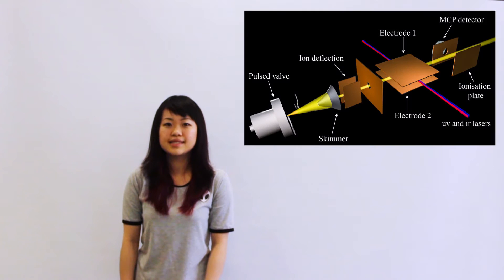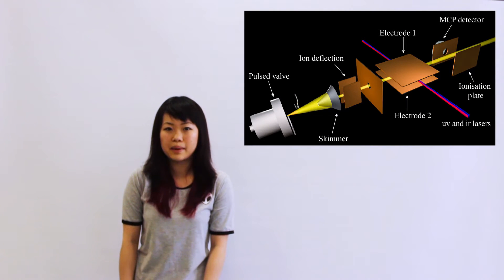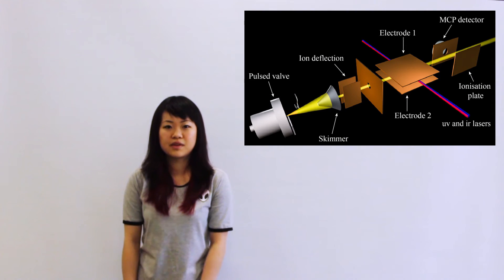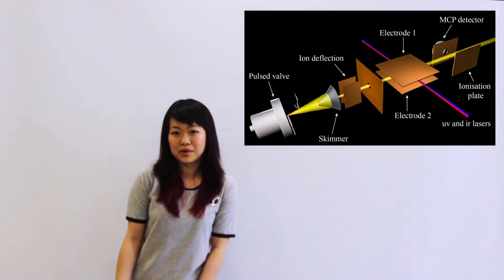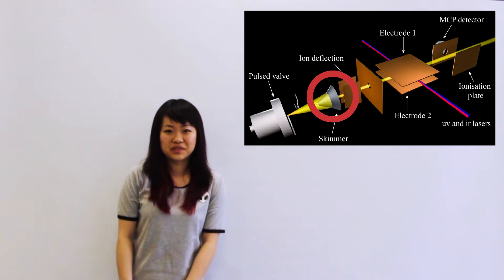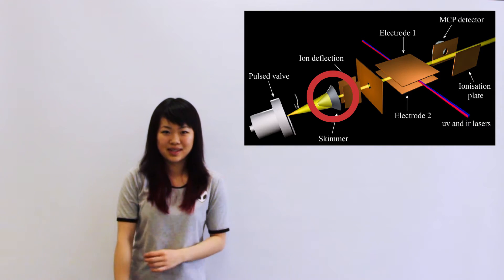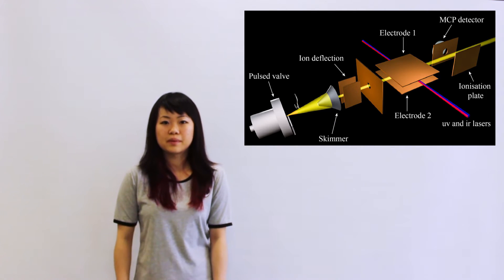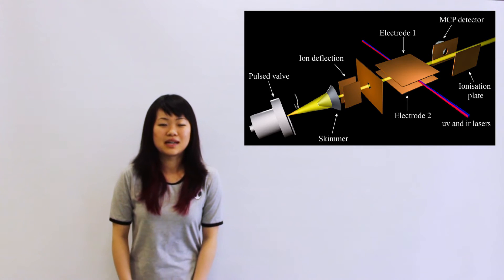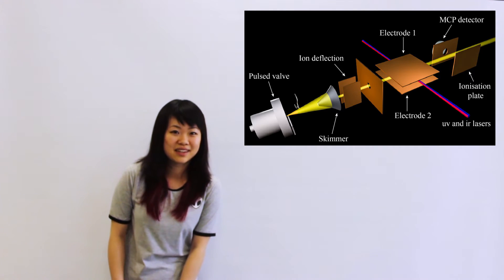In order to probe molecules' behaviour in these excited energy states, we must first set up an atomic beam experiment. Here we use helium. To do this, first we need to set up a supersonic beam — this means that the speed of the atoms is greater than the speed of sound. The atoms get fired out and go through a skimmer, which only lets atoms of certain velocities through. This ensures that the atomic beam is cold enough. The atoms travel at a speed of 2,000 meters per second — about 10 times the top speed of a Mercedes.